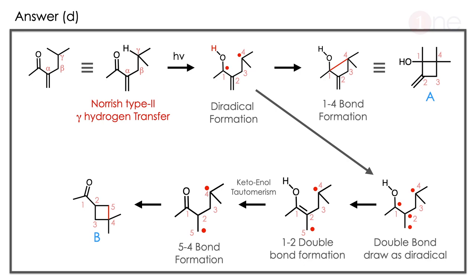The diradical at positions 1 and 4 connects to form a 4-membered ring system. If you go by the usual formula, you will end up with product A. So we rewrite to the cyclobutane ring and the choice is there.